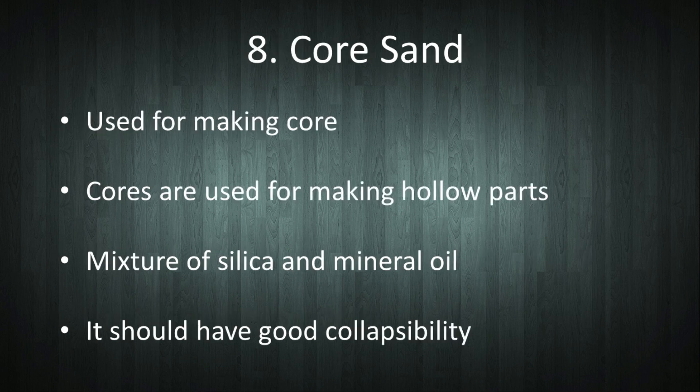Next is core sand. As the name implies, it is used for making cores. It is a mixture of silica and mineral oil. Cores are used for making hollow castings. It should have good collapsibility.